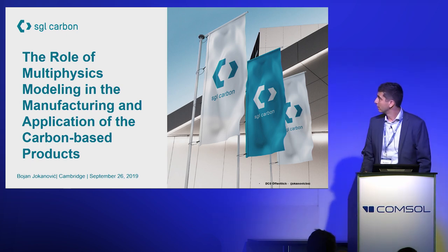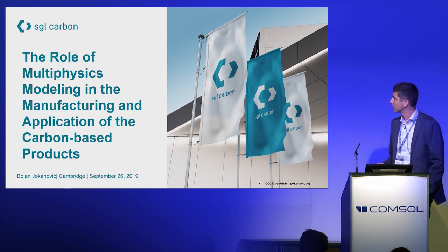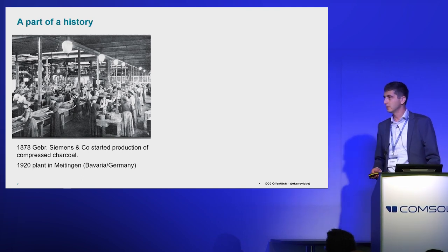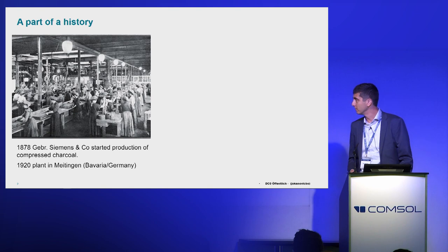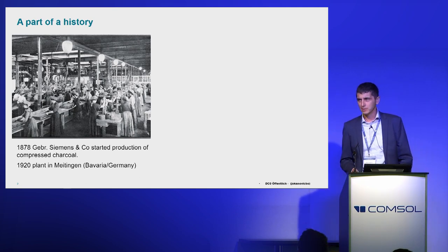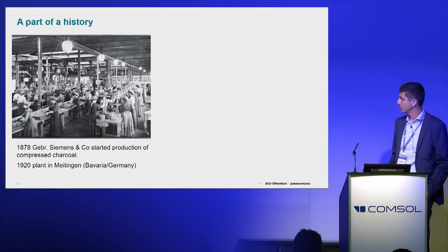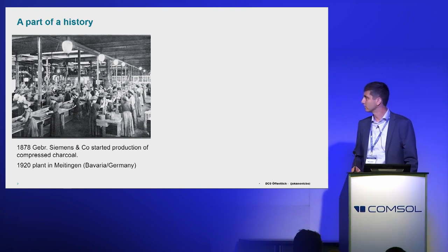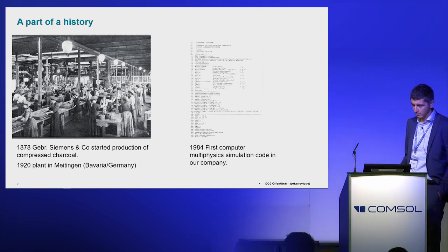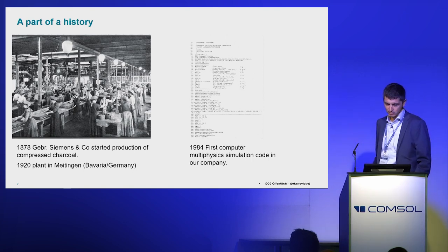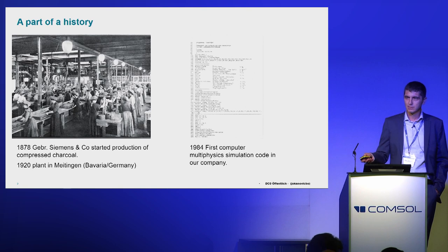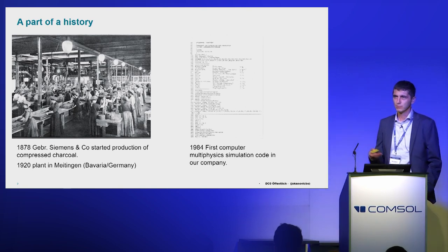Richard showed two days ago a brief history of COMSOL, so I'll also show how our company started. It started in 1878 and was part of Siemens at that time. The first thing they did was produce compressed charcoal. In 1920, our largest plant — the plant where I come from — was founded in Meitingen, so next year will be exactly 100 years. For modeling and simulation, this milestone is also important. This is our first multi-physics simulation code, written by my first supervisor in 1984, and at that time we could simulate 1D Joule heating with thermal stresses.